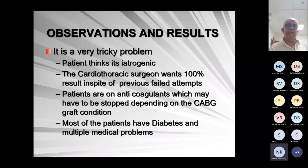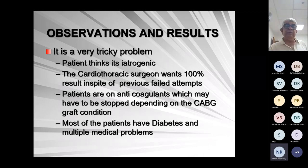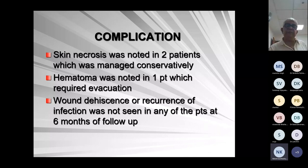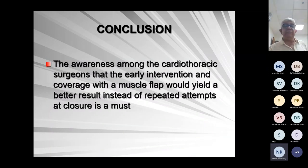This is a very tricky problem because cardiothoracic surgeons attribute 100% risk of result in spite of four or five prior failures. Patients are on anticoagulants which may have been stopped depending on the CABG graft condition, and most have multiple comorbidities — at least diabetes. Complications include skin necrosis, temporarily managed because there is underlying muscle. Hematoma required evacuation in one patient — the turnover flap major pedicle may have bled. Fistula or recurrence of infection was not seen in any patient in six months of follow-up.